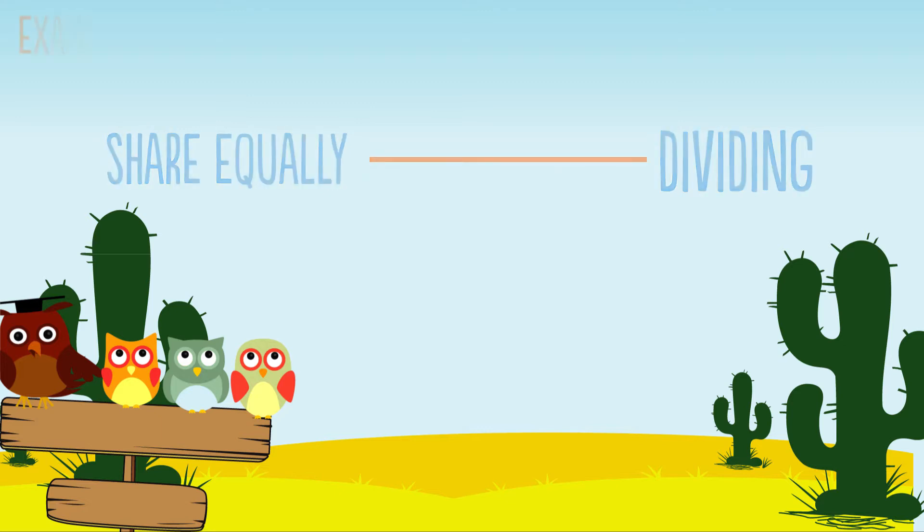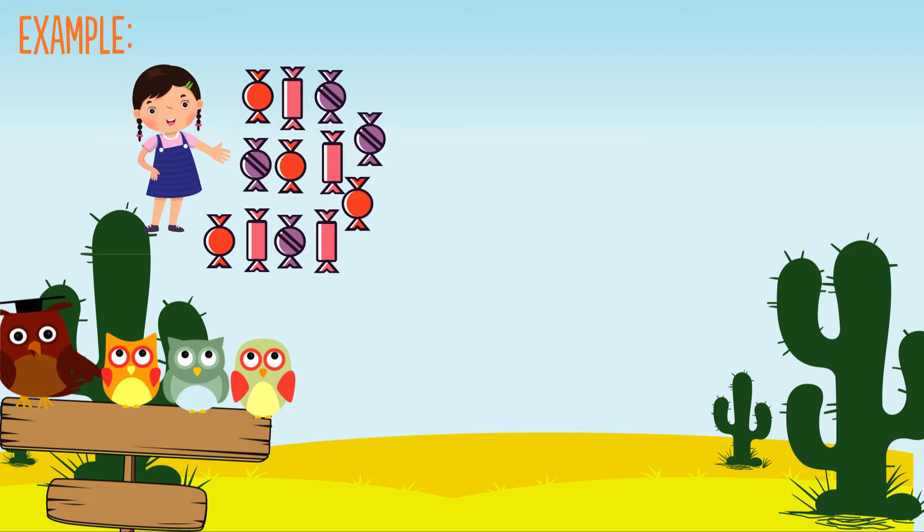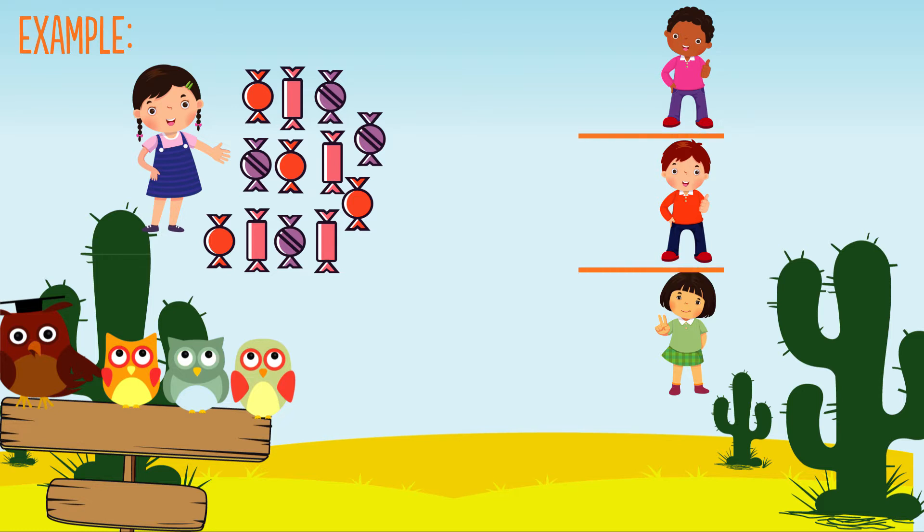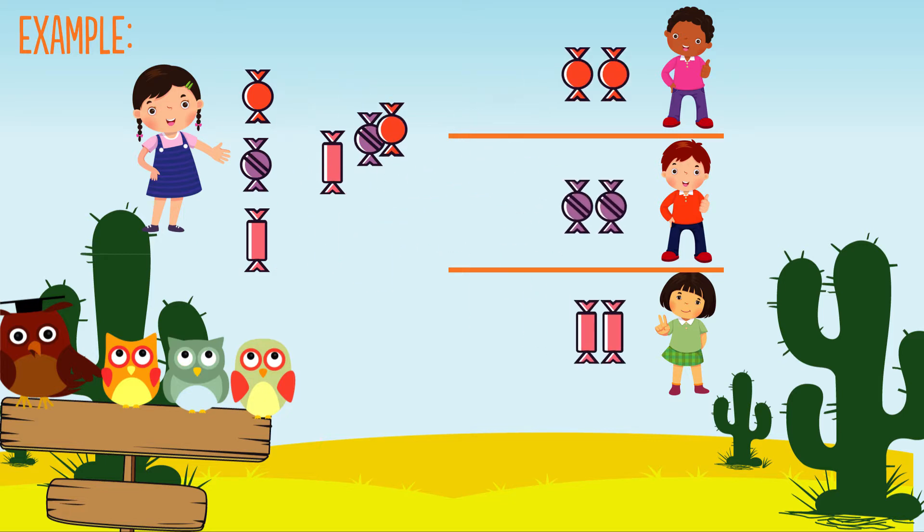Example: Sandy has 12 sweets and she wants to share them equally between her three friends. Let's start by creating three groups, then add one sweet at a time into each group until all 12 sweets have been shared equally.